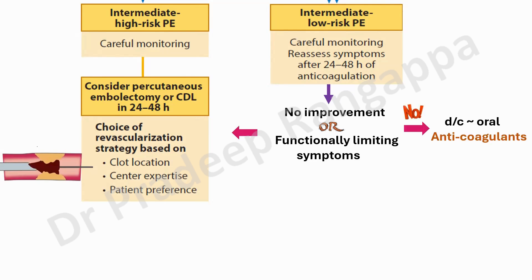If there is good symptomatic improvement and no functional limitation, the patient can be discharged on oral anticoagulation. Overall, this algorithm signals a shift in PE management — paralleling what we've seen in ACS and stroke — toward more invasive strategies, with catheter-directed lysis now being considered even in moderate-to-high risk PE.